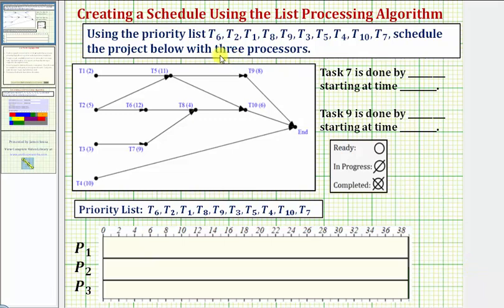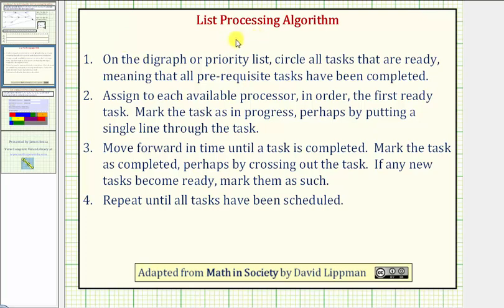We want to use the priority list given here and schedule the project below with three processors using the list processing algorithm. So for review, to apply the list processing algorithm, step one: on the digraph or priority list, we circle all tasks that are ready, meaning that all prerequisite tasks have been completed.